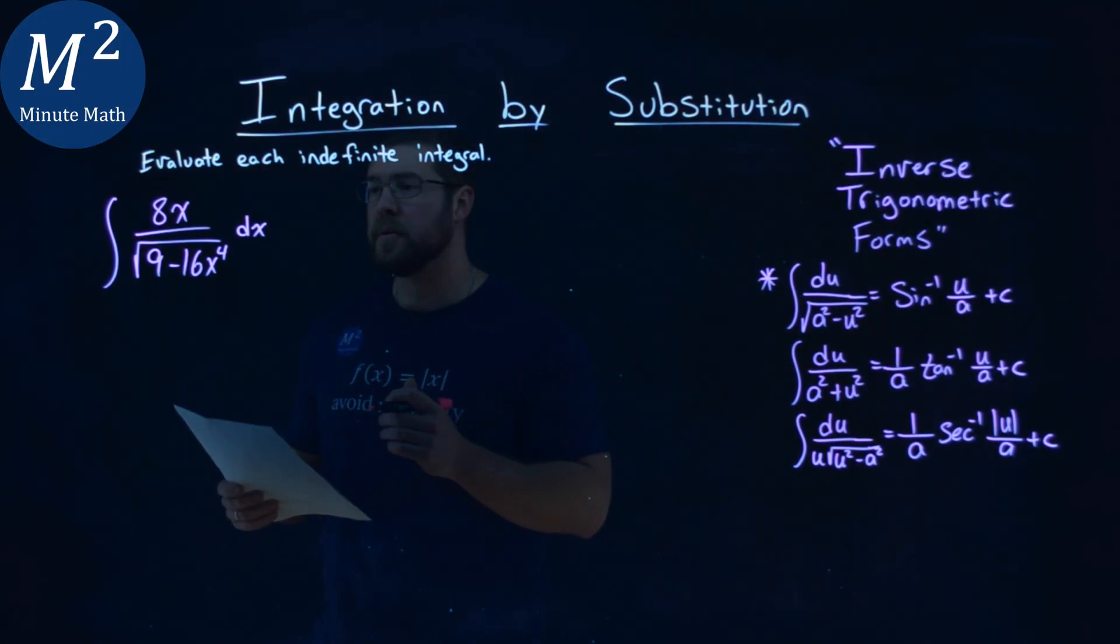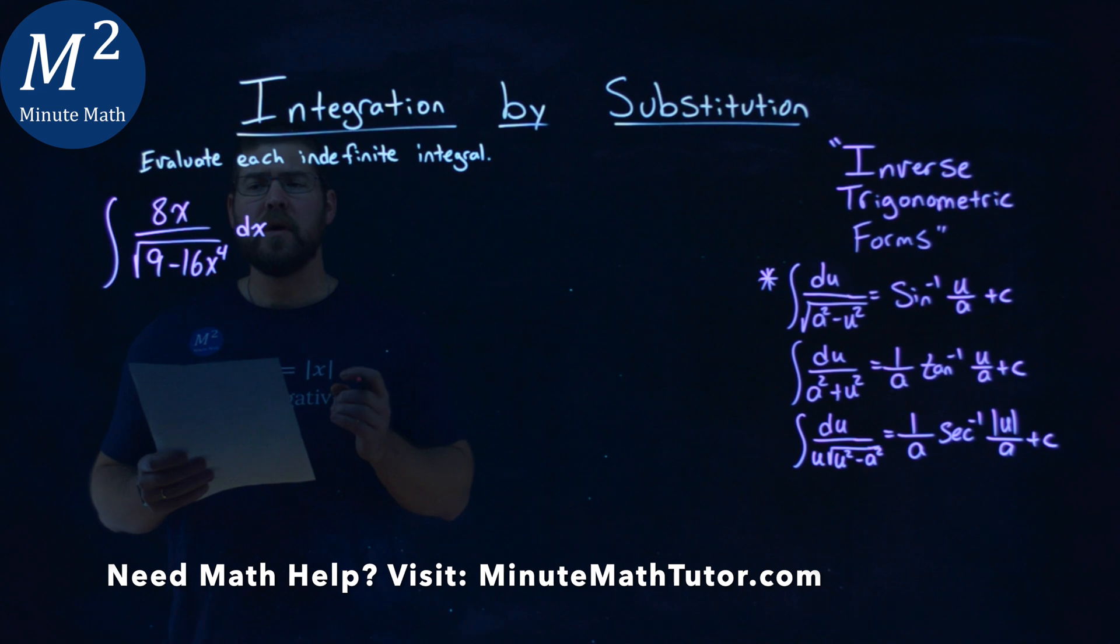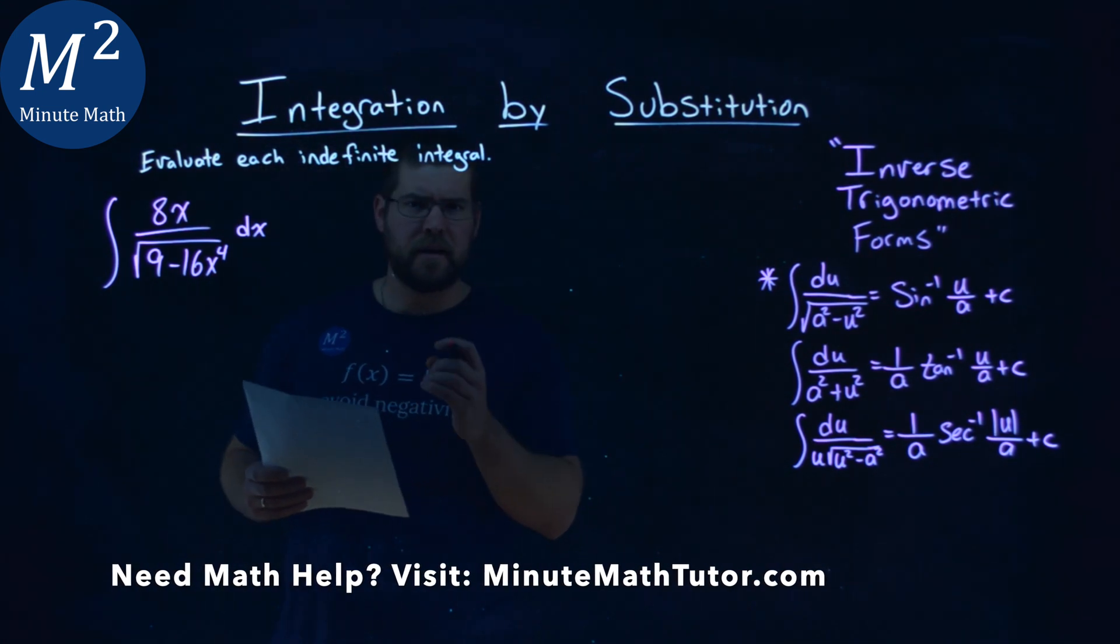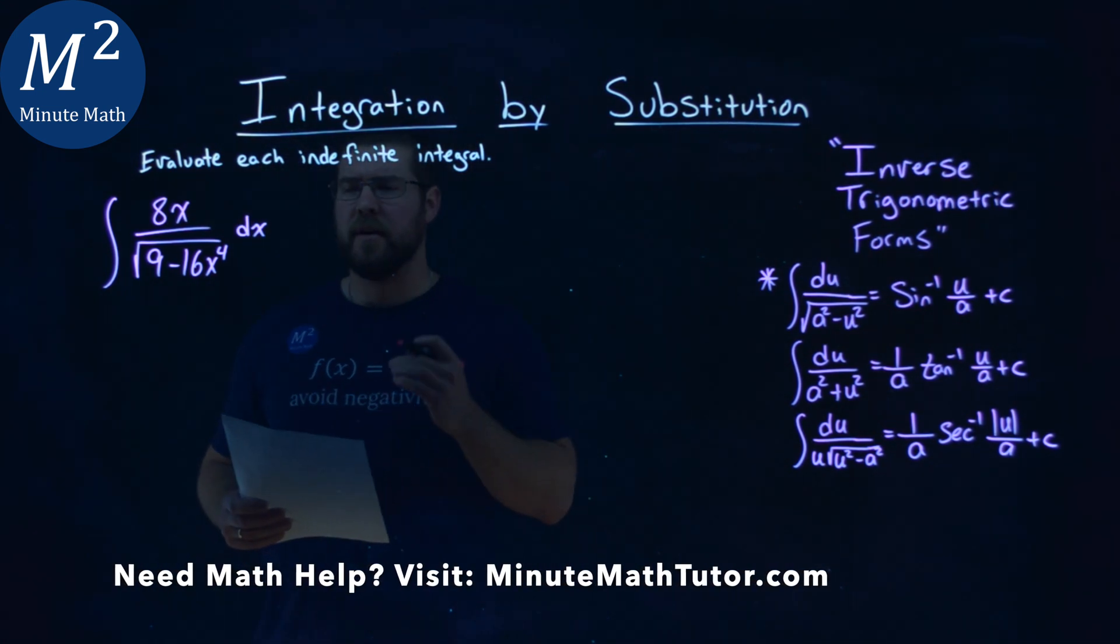We're given this problem right here: the integral of 8x over the square root of 9 minus 16x to the 4th power, dx. We have to evaluate this indefinite integral.